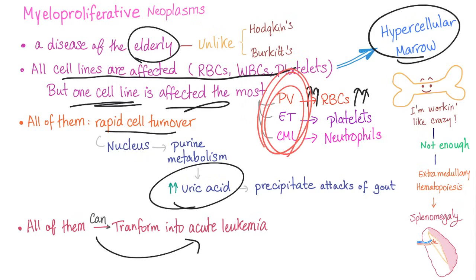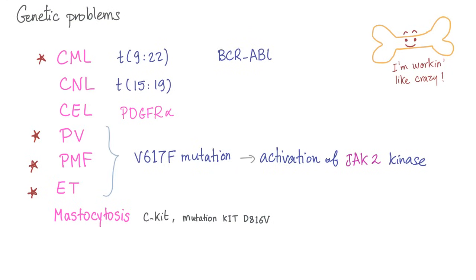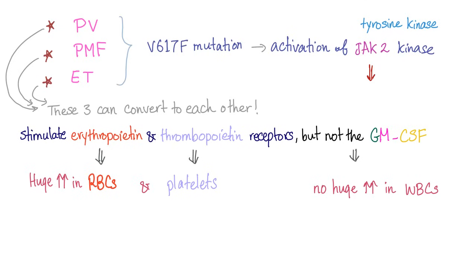These three types of neoplasm can convert into each other. Polycythemia can be converted into ET, and it can also be converted into myelofibrosis — this is called malignant transformation. Polycythemia vera, primary myelofibrosis, and essential thrombocytosis are due to a problem with activation of JAK2 kinase — this is a mutation. JAK2 kinase is very manipulative. Activation of JAK2 kinase leads to stimulation of the erythropoietin and thrombopoietin receptors, as discussed in the previous video.